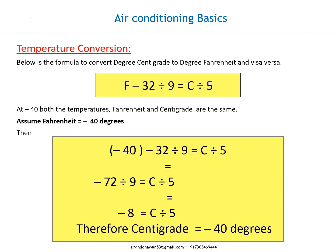Temperature conversion: below is the formula to convert degree Centigrade to degree Fahrenheit and vice versa: (F − 32) / 9 = C / 5. At −40, both Fahrenheit and Centigrade are the same. Assuming Fahrenheit = −40°: (−40 − 32) / 9 = C / 5 → −72 / 9 = C / 5 → −8 = C / 5, therefore Centigrade = −40°.